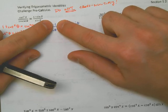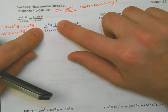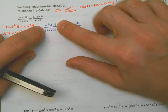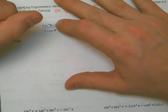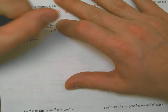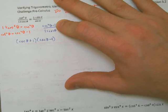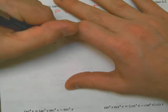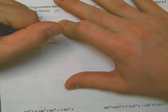Once again, choose the side with the tougher denominator — the one with multiple terms. Work with squares when you can, using a Pythagorean identity to replace them, and that often ends up being something you can factor. Let's try another similar example. Looking at these two sides, I'll probably start with the left because it has two terms in the denominator. I know that tangent squared x plus 1 equals secant squared of x.